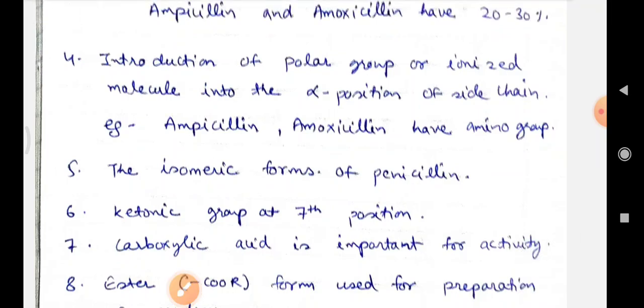The isomeric forms of penicillin differ in their activity. For example, the D-isomer is 2 to 8 times more active than the L-isomer of amoxicillin.